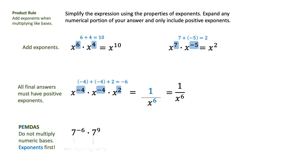So in this last example, we do have sevens as our like numeric bases, but we're going to focus on the exponents because of PEMDAS. And when we add those, negative 6 plus 9 equals 3, we will get 7 raised to the third power.